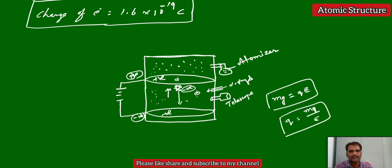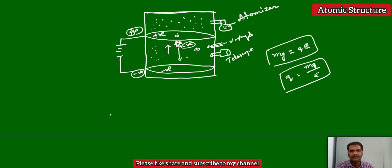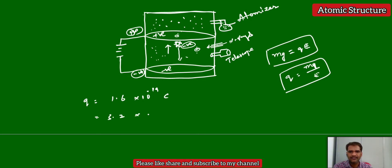He observed that the charge of the oil droplet is an integral multiple of a base value. Every time, by applying different electric fields or using different oil droplets, he observed the value of Q to be 1.6×10⁻¹⁹ coulombs, or 3.2×10⁻¹⁹ coulombs, or 4.8×10⁻¹⁹ coulombs, and so on — all integral multiples of 1.6×10⁻¹⁹.